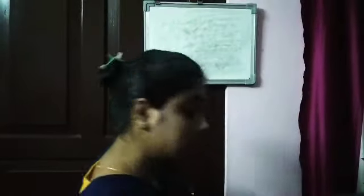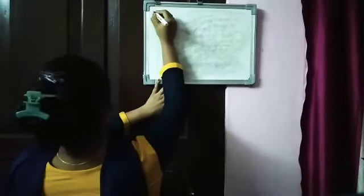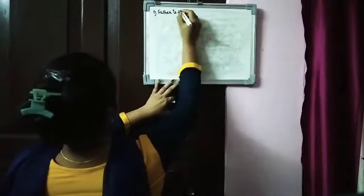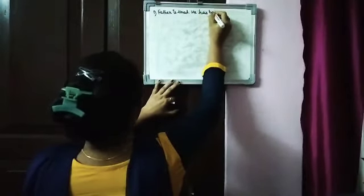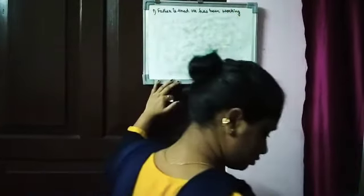Number one question is already done for you. You can take the help of this example. Father is tired. He works all night. The verb 'work' is used. Now you have to show this in the present perfect continuous tense form. Father is tired - he has been working all night.